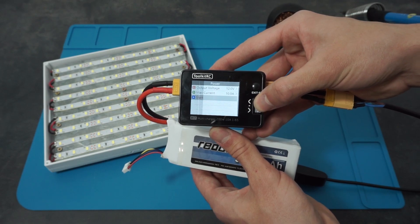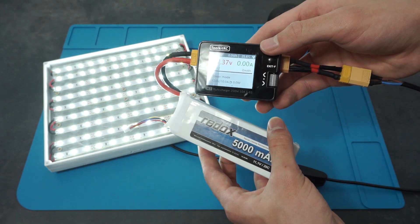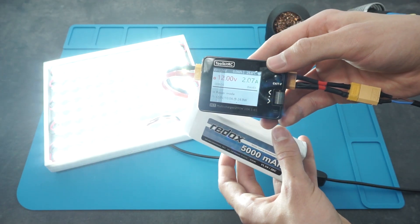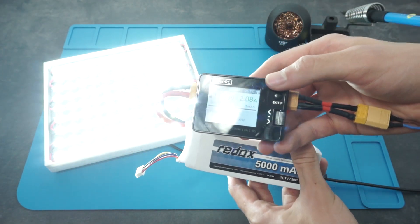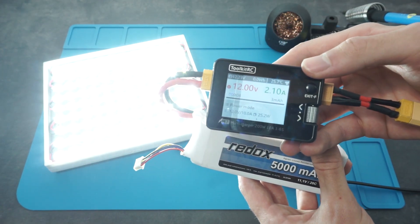Finally we can measure how much current our panel consumes. My drone charger shows that it's about 2 amps at 12 volts, which gives us roughly 25 watts total. Pretty good for such a bright panel.